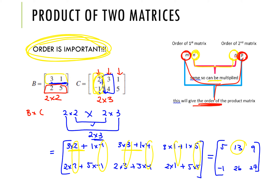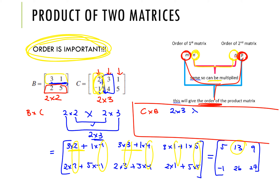What if the question asked for C times B instead? C is a two by three matrix times B which is a two by two — the inner numbers are three and two, which are not the same, so we can't find a product: it's not defined. You'll often be asked why the product CB is not defined, and the answer is that the number of columns in matrix C is not equal to the number of rows in matrix B.